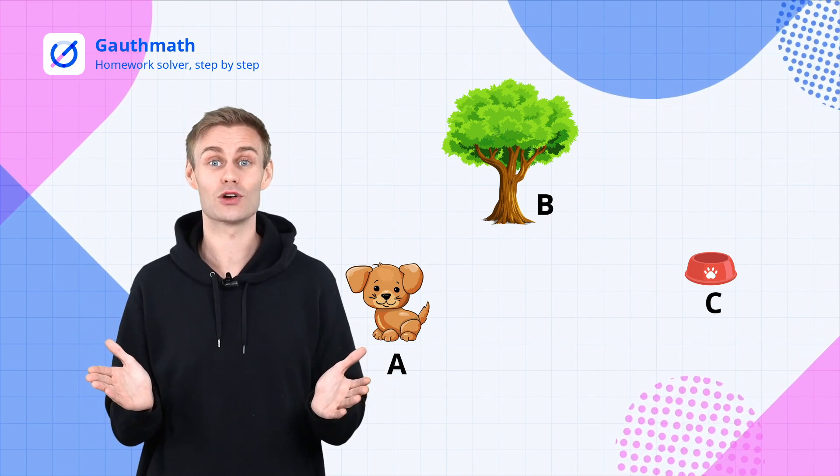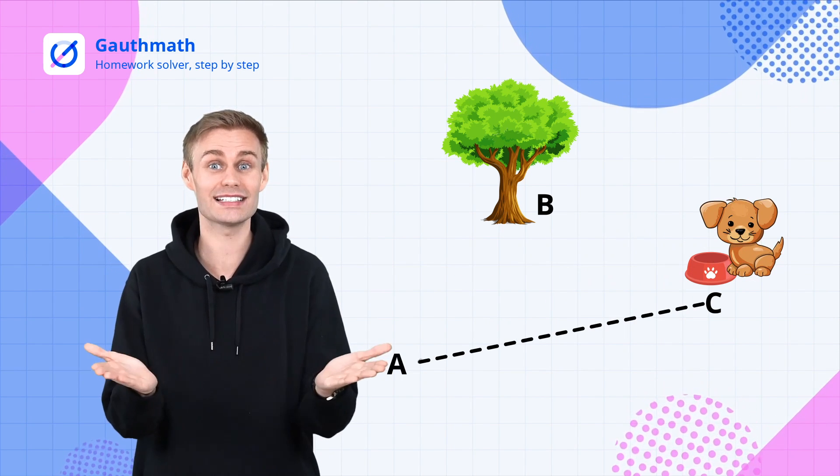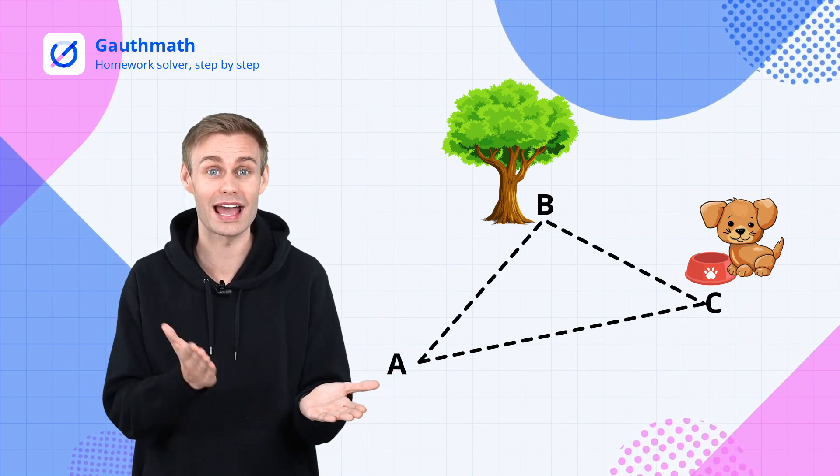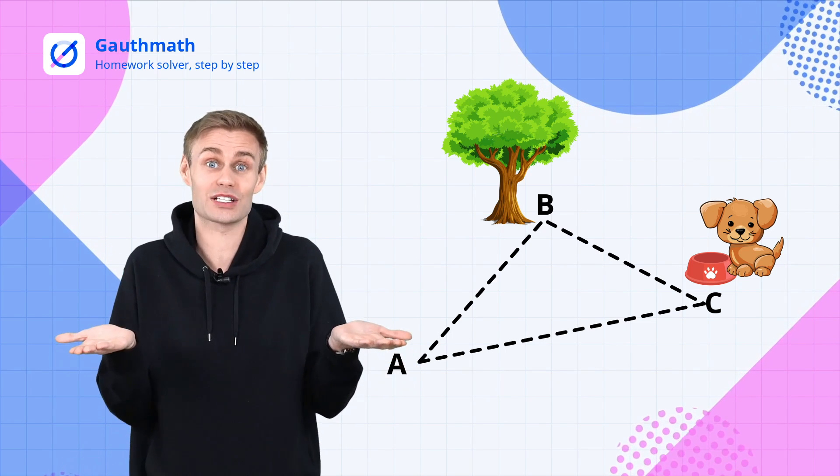Without any surprise, your puppy will run straight towards the food along AC, instead of running out of his way AB plus BC, unless it's not hungry and wants to take extra exercise.